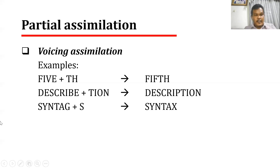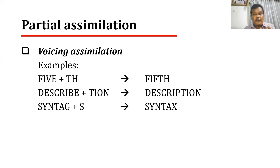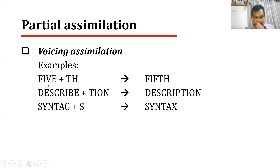Let's see some examples. The first one is 'five' plus the suffix '-th'. The TH is a voiceless consonant, so whenever 'five' ends in the sound V, which is voiced, the sound V is changed into a voiceless sound which has the same place of articulation. V shares the same place of articulation with F, so V is changed into F. Therefore, 'five' plus '-th' becomes 'fifth'.